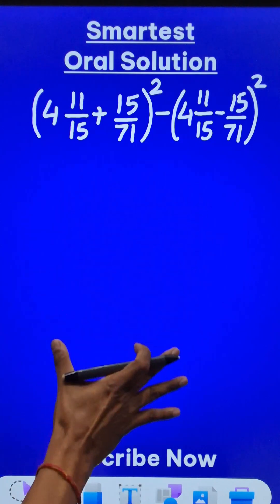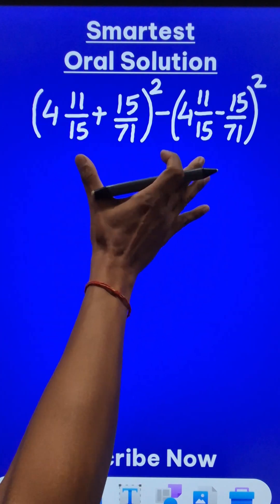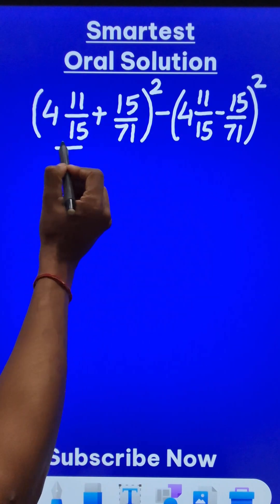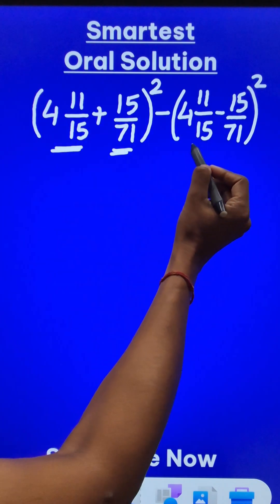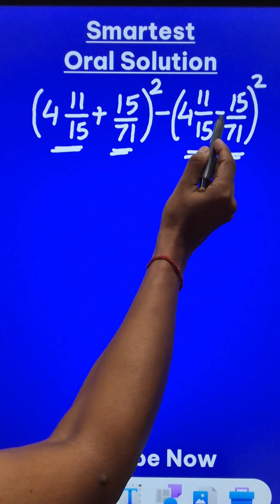Now, whatever I'm writing here is the thought process. I'm just writing to illustrate the working that should go on in the mind. So here we can see the terms, this term and this term, they are the same in the other bracket also, but the sign here is positive and the sign here is negative.